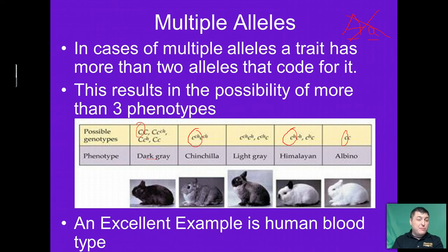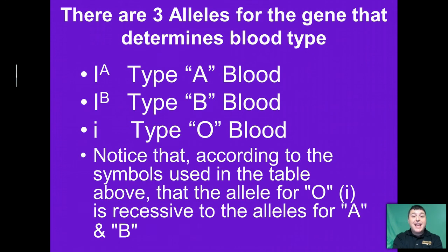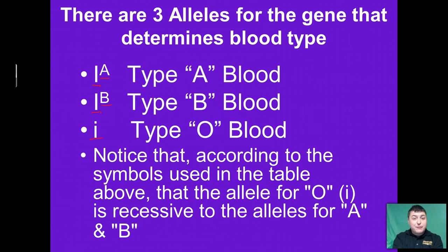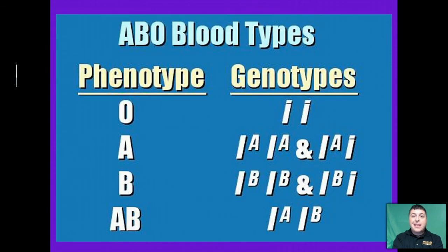A great example of multiple alleles in humans is our blood type. There are three alleles for the gene that determines blood type: A alleles, B alleles, and O alleles. A alleles are written with a capital I superscript A, B alleles with a capital I superscript B, and O alleles with a lowercase i. This shows that A and B are both dominant over O. Depending upon the combination of alleles that you receive, that determines your blood type. If you only receive recessive alleles, then you're going to have O blood type. There are two ways to have the A blood type: you can be homozygous for the A trait, or heterozygous having both A and O alleles.